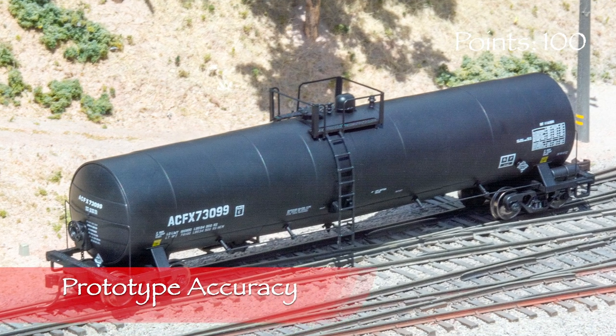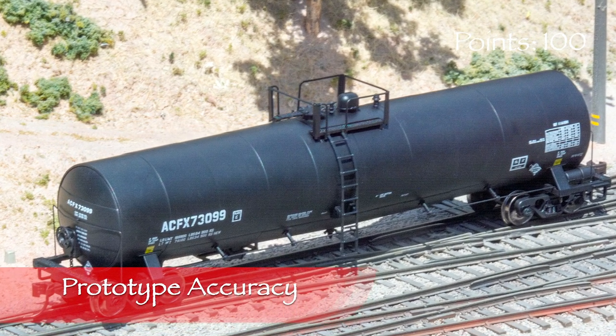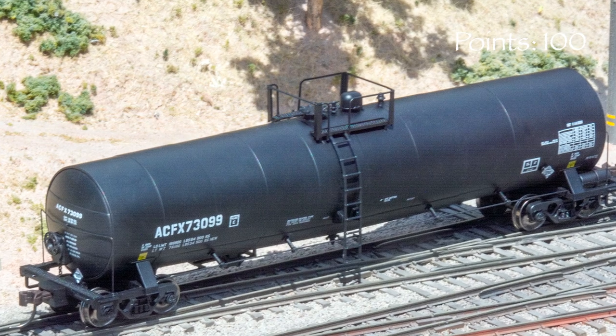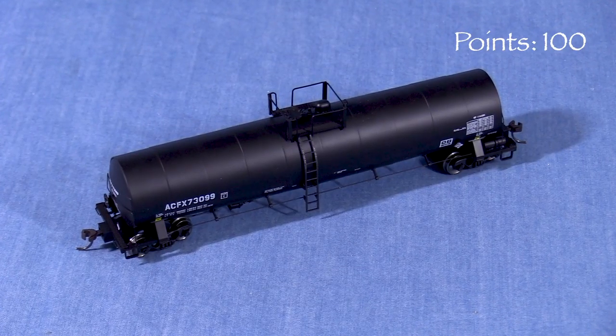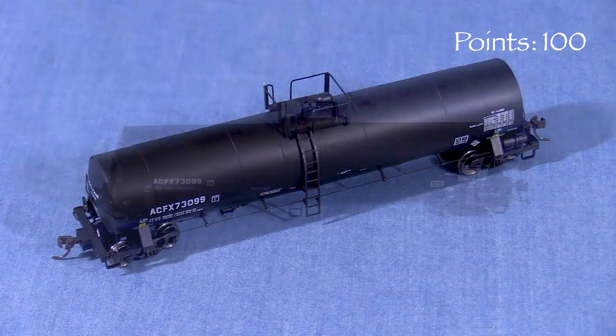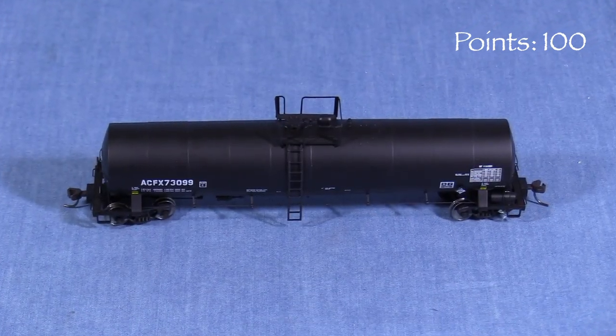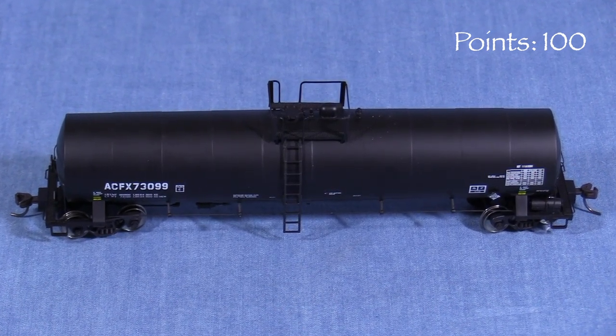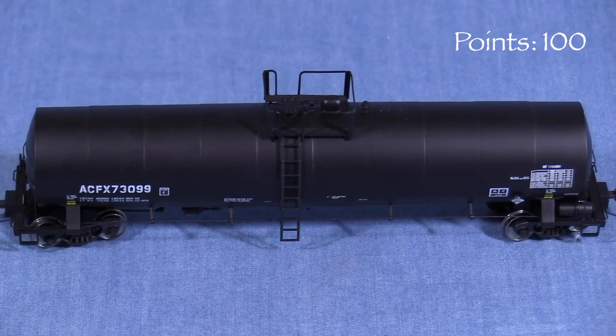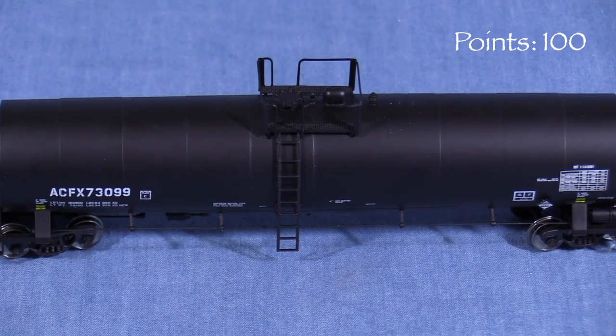My model represents a tank car assigned to asphalt service. I was unable to find any photos of the real ACFX 73099. Atlas offers two other numbers for ACFX asphalt service cars, 73109 and 73117. I did manage to find a photo of 73109. While the Atlas model looks similar, close examination reveals that the model is not the same car.